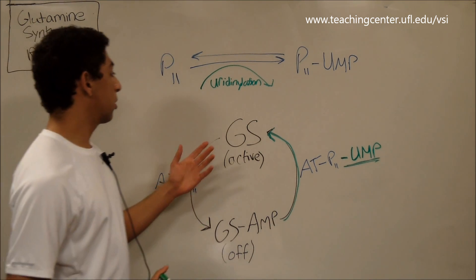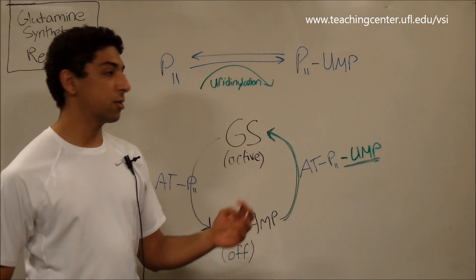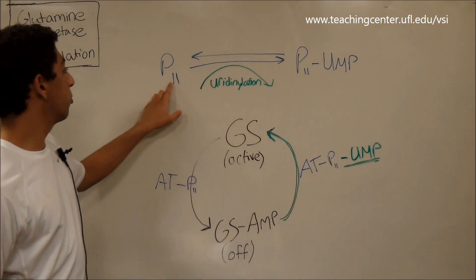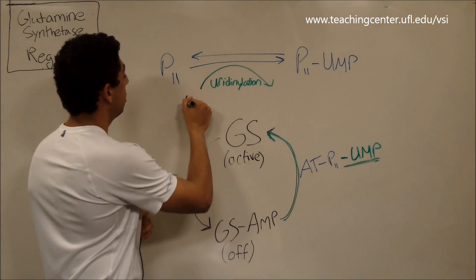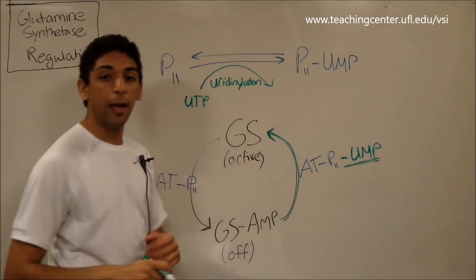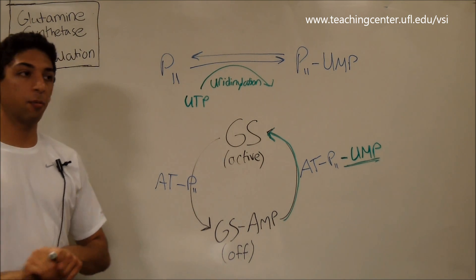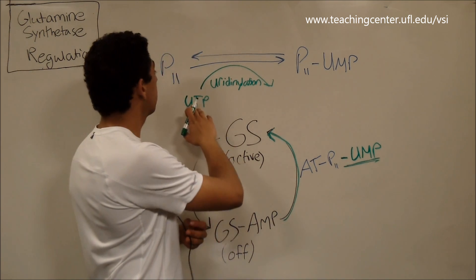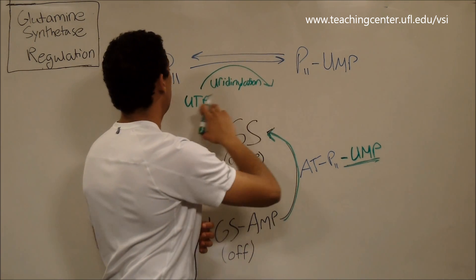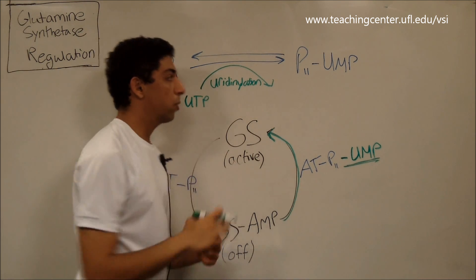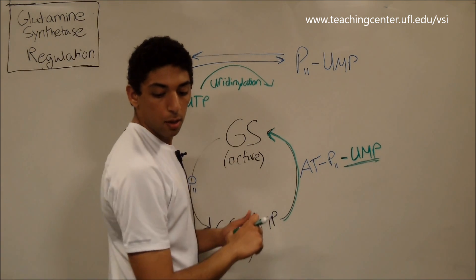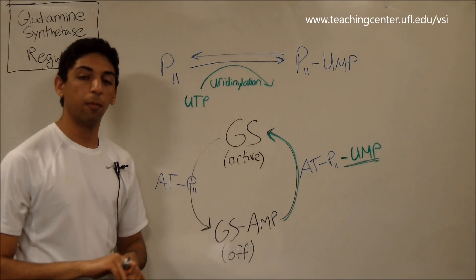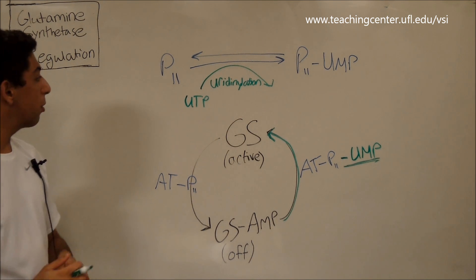We're going to need to attach a UMP to this molecule. That process of attaching a UMP is called uridinolation. Uridinolation is just a kind of awkward sounding word really, but it just refers to the fact that you're taking a UMP and attaching it to the P2. So the way we do that is we start with a UTP, which once again is similar to ATP, very similar to ATP, but with a U instead of an A. And we attach the UMP here. We take the UTP and we make it into UMP, and then we attach the UMP to the P2 regulatory molecule.